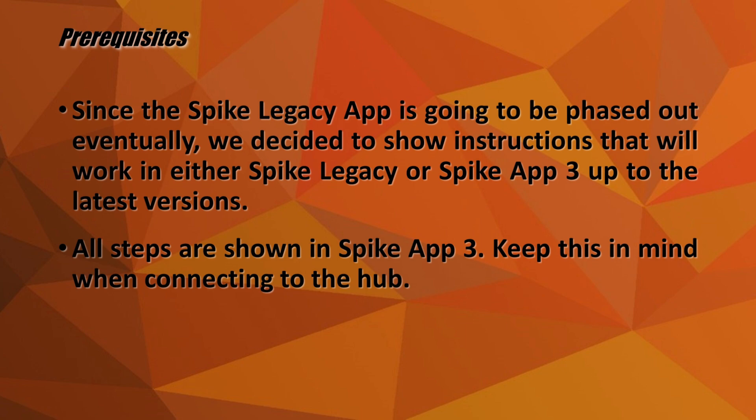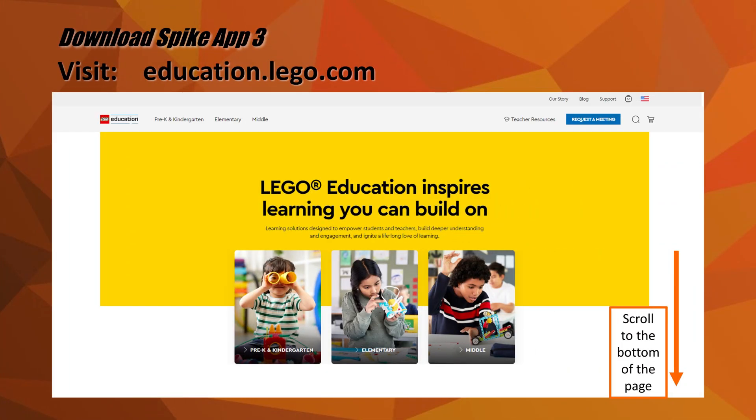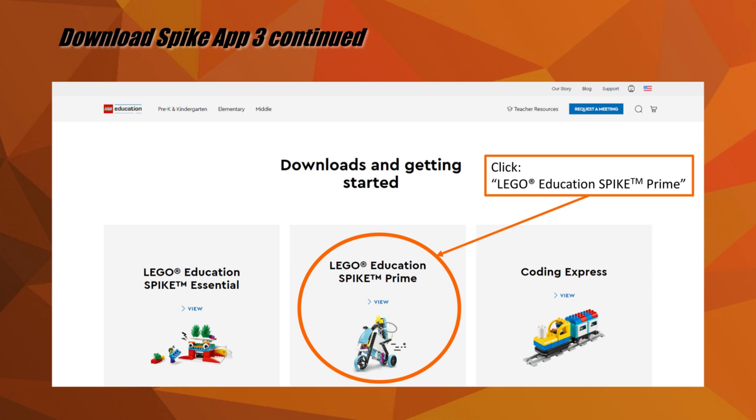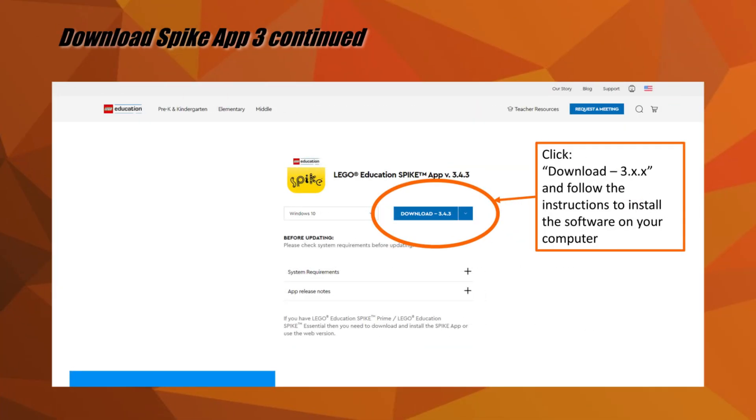Keep this in mind when connecting to the hub. LEGO Education provides detailed information on Spike Prime and Word Blocks online on its website education.lego.com. Scroll to the bottom of the homepage to find the link for downloading the software. After you click the download link, select LEGO Education Spike Prime software from the options that are presented. Click on the download button and follow the instructions to install the software on your computer.